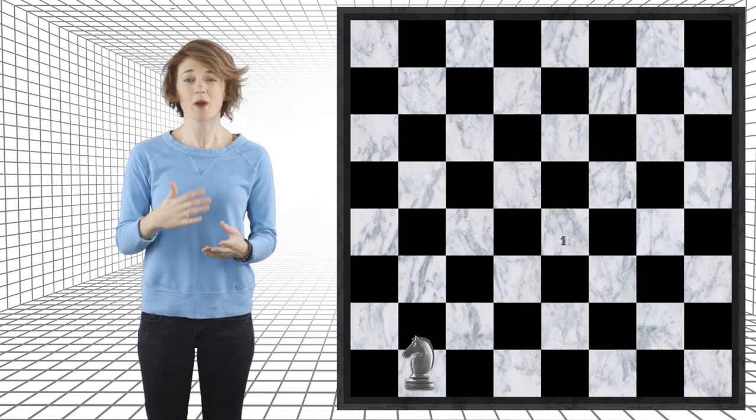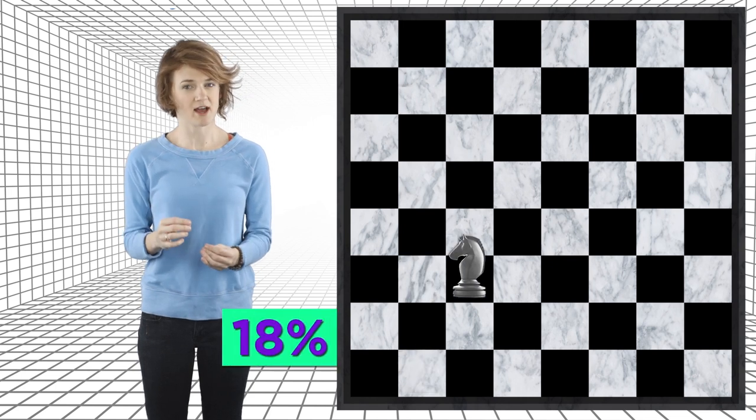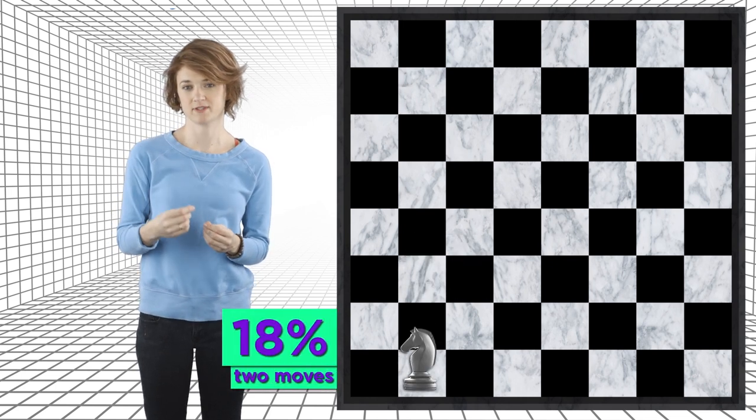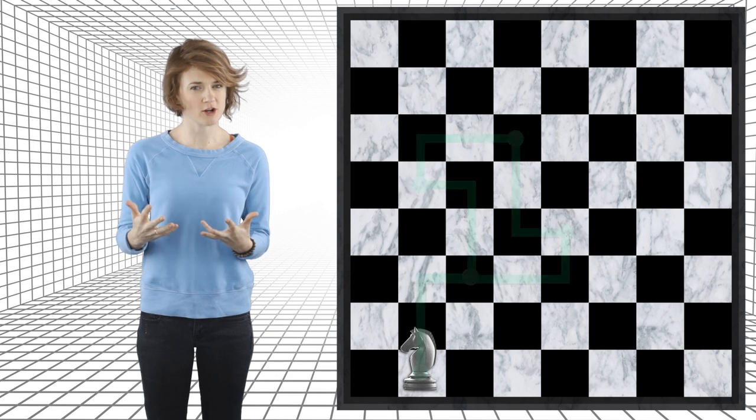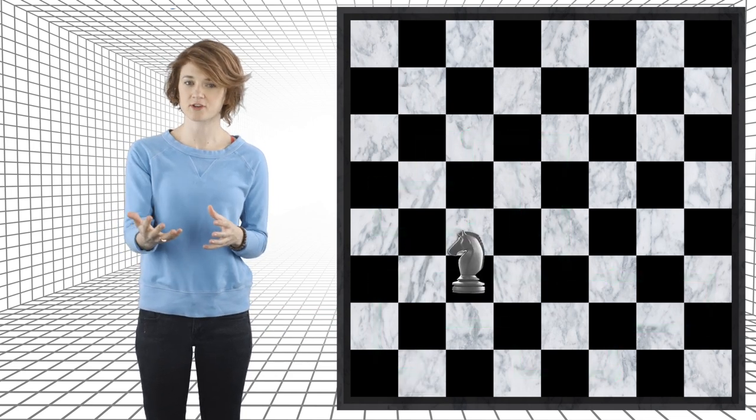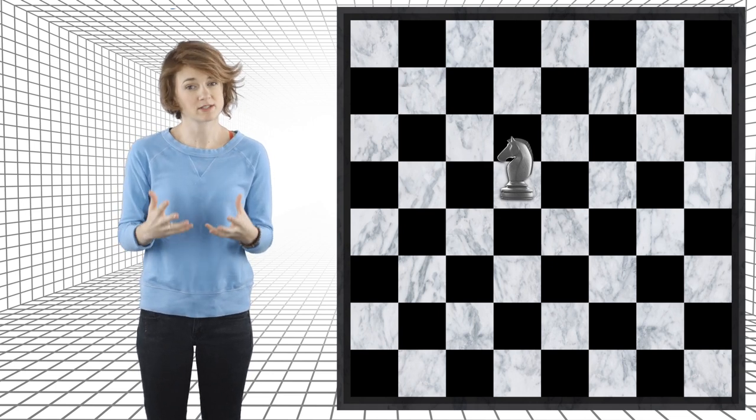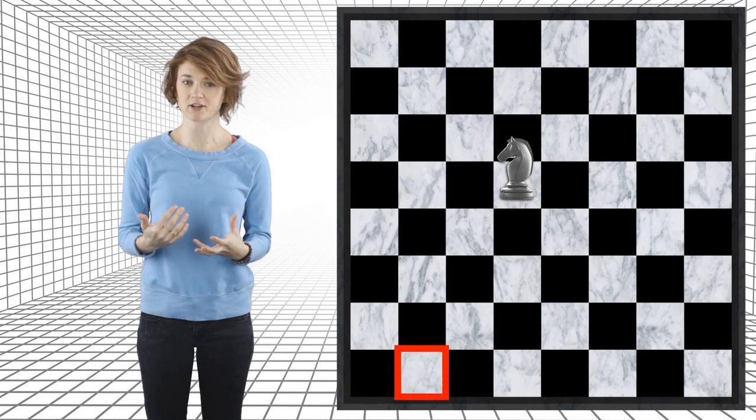Eventually, the knight makes its way back to its starting spot. About 18% of the time, it hops back in two moves. But it could take a much longer path, like this or this. Once it gets to the center of the board, it has a lot of options for where to jump, and could wander around for a long time before getting back to its starting spot.